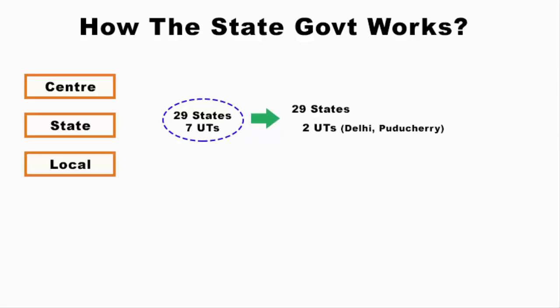The remaining 5 union territories are ruled directly by the central government — that is what the word 'union territory' means. This video is about how the state government works, so our focus will be on state government.